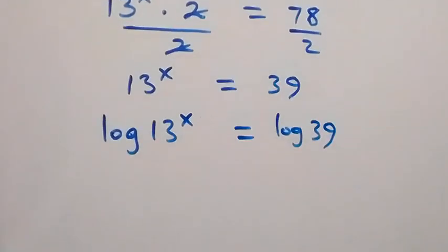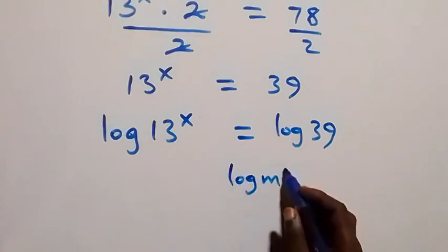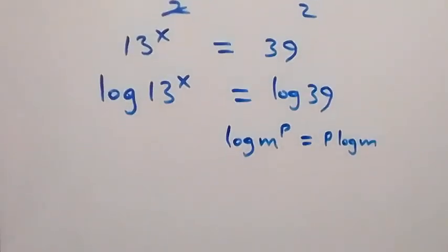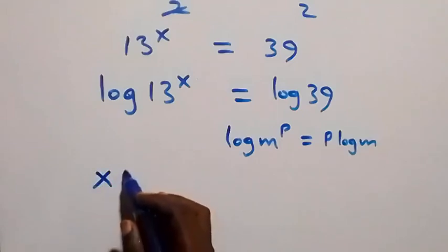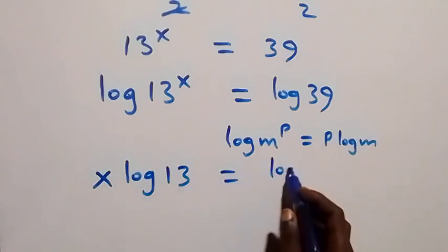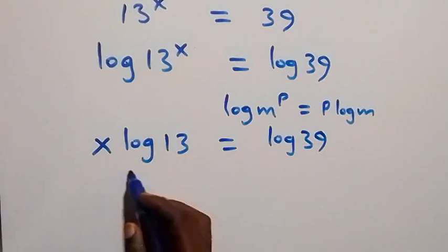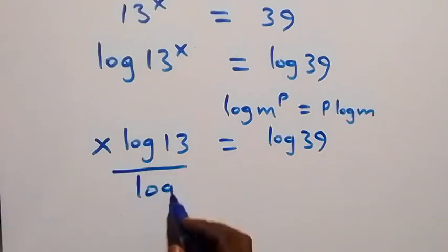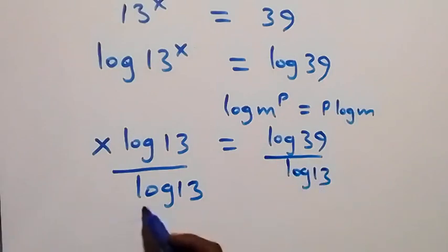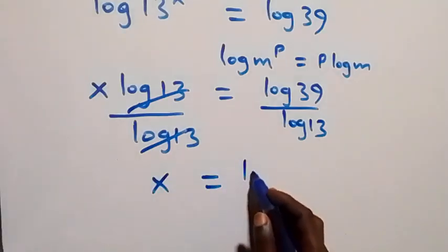When we apply the power law of logarithm — log m raised to power p equals p·log m — the power here is x, so this becomes x·log 13 equals log 39. Then we divide both sides by log 13. The log 13 cancels, and we have x equals log 39 over log 13.